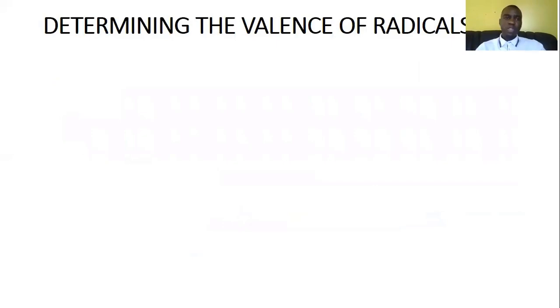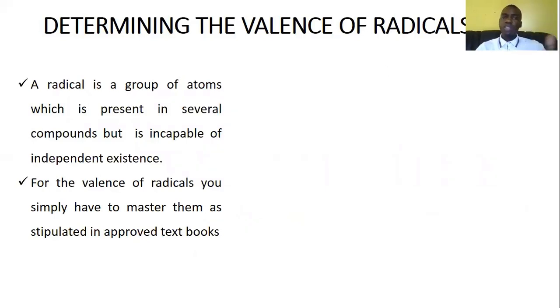Lastly, but not the least, we are also going to look at how to determine the valence of what we call radicals. Now, a radical is simply a group of atoms which is present in several compounds, but is incapable of independent existence. So for the valence of radicals, there is no formula on how you can find them, no laid down rule. The only rule I'm going to tell you is you have to memorize these valences of radicals in literature sources. By literature sources, I mean check your chemistry textbook that has been recommended to you. Every recommended textbook has a table of radicals, which is going to show you the name of the radical, the formula of the radical, and the valence.